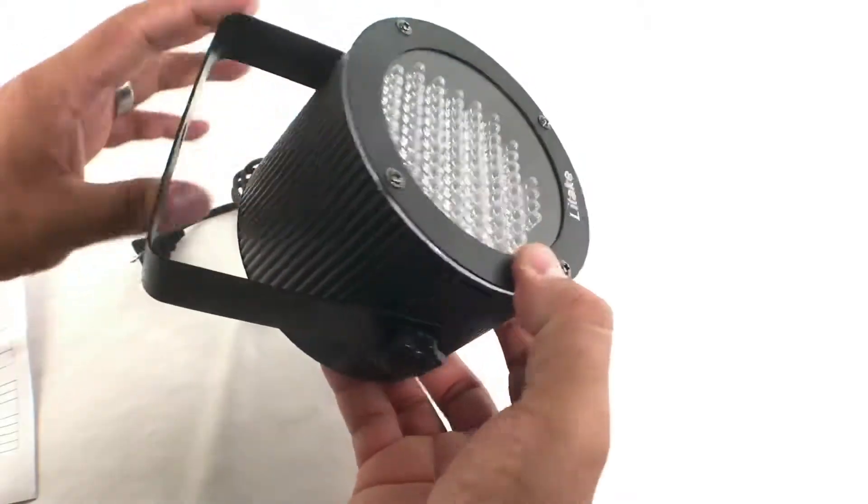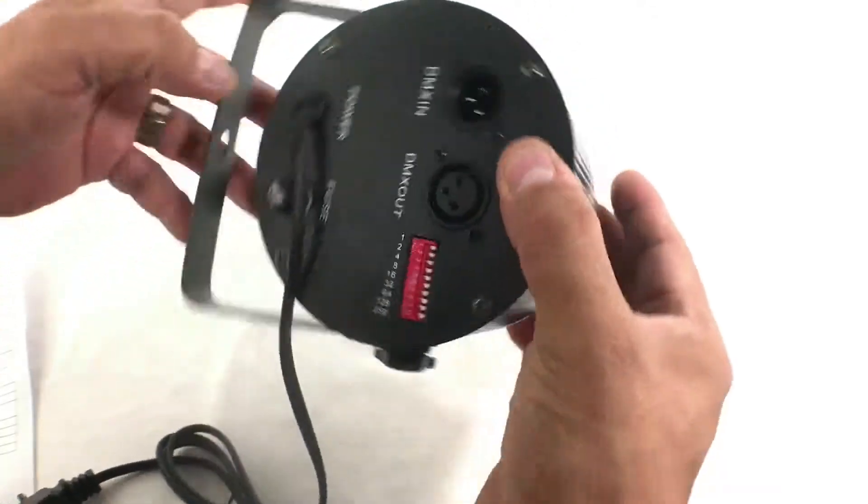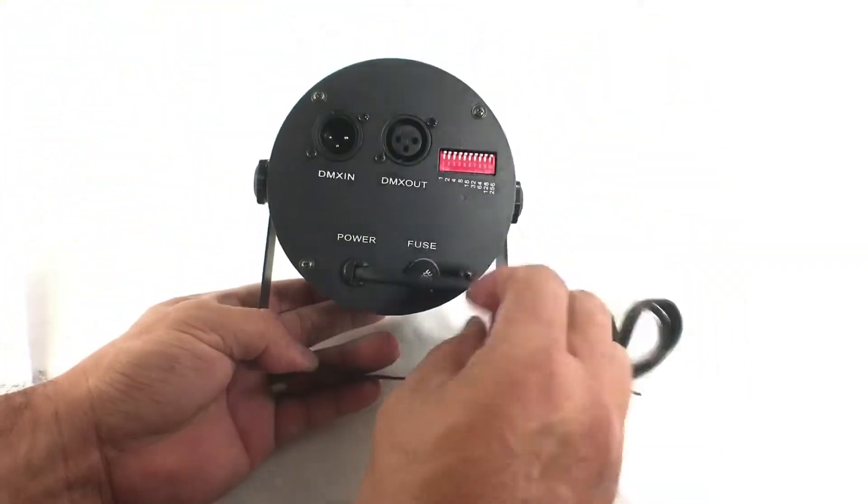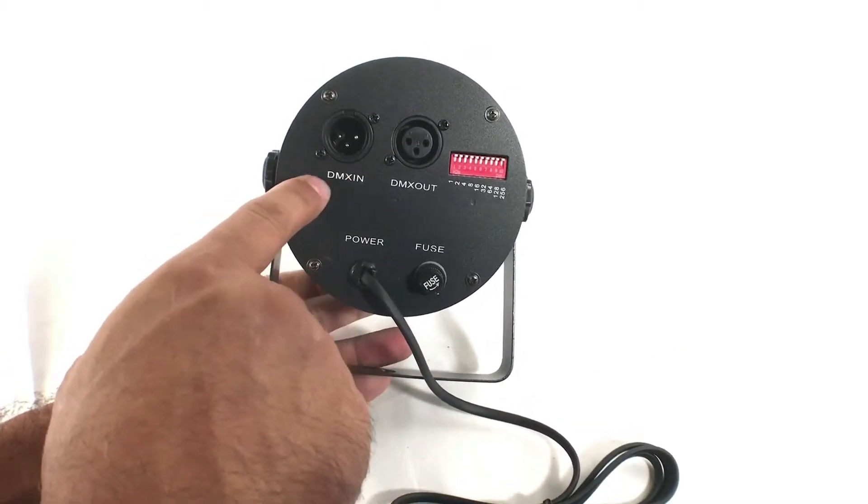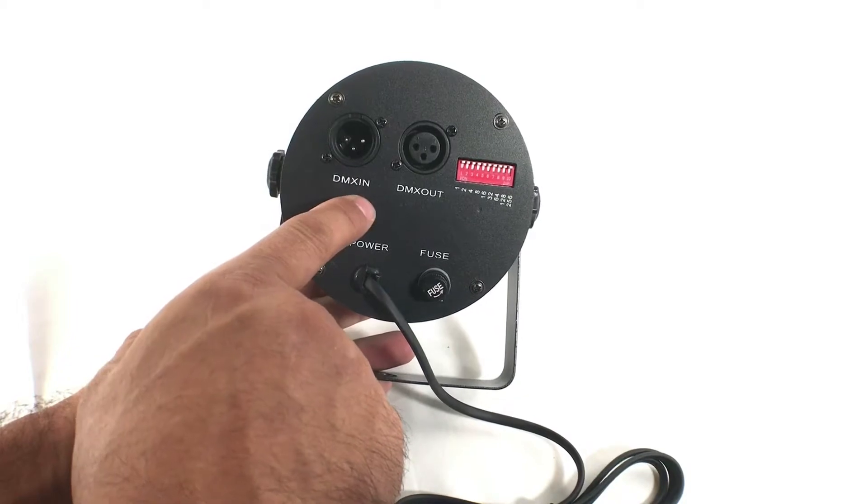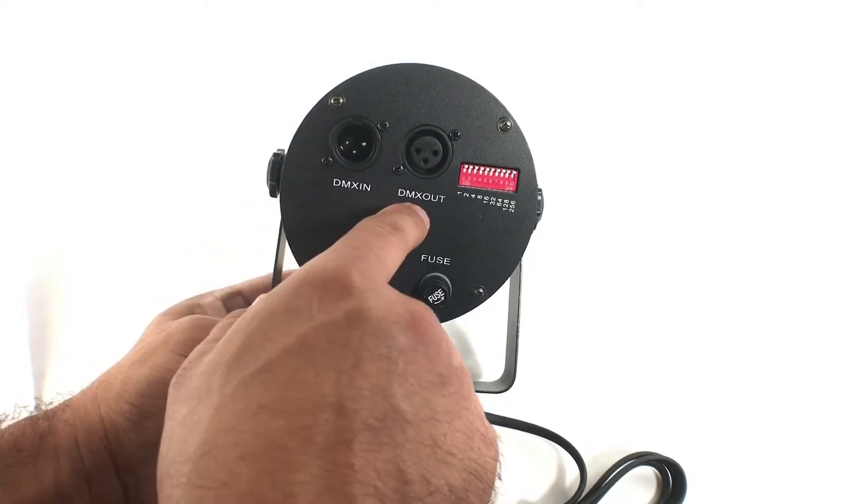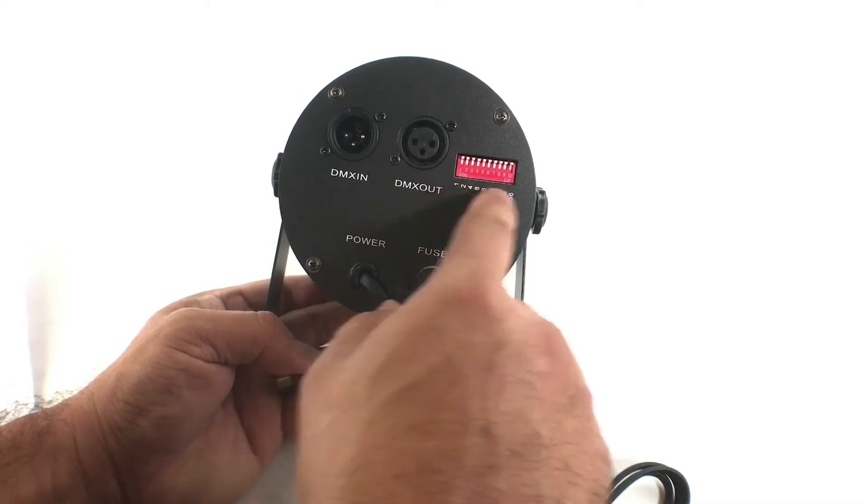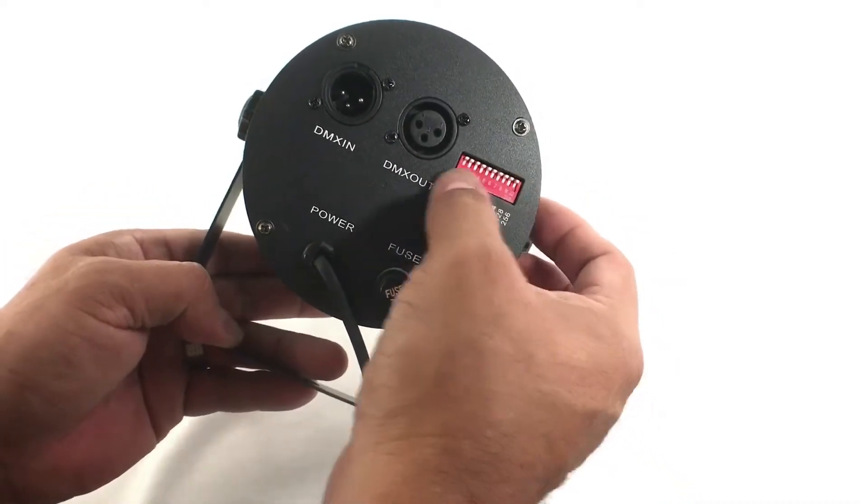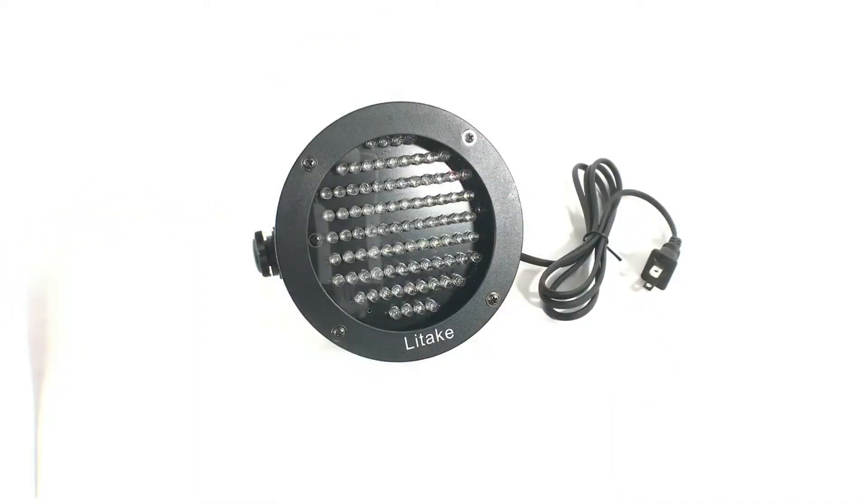So if you see the rear here, you see that you get the fuse and the DMX in cable and DMX out cable. You could group these, set up the address whatever you want here. Pretty cool. LED 25 watts, 86 LED lights.